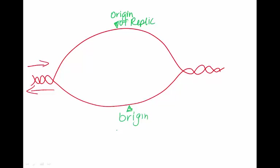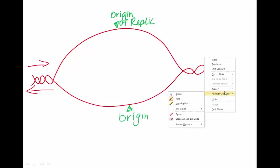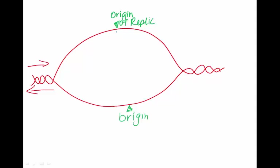At the origin of replication, we will see primase come in and lay down a short RNA primer. This is primase, the enzyme. What happens up there will also happen down here just in the opposite direction.